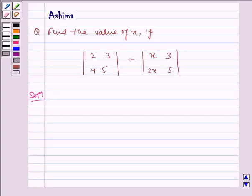Hello and welcome to the session. Let us understand the following problem today. Find the value of x if determinant 2, 3, 4, 5 is equal to x, 3, 2x, 5.